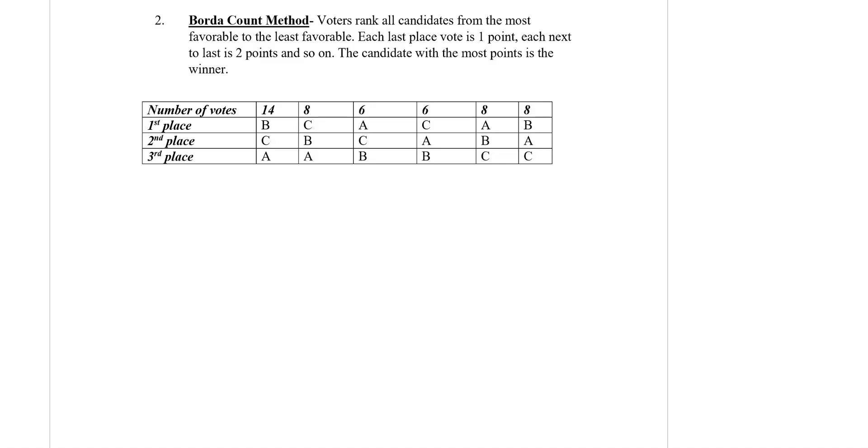In this video we'll talk about the second voting method called Borda Count method. Voters rank all candidates from the most favorable to the least favorable. Each last place vote gets one point, each next to last is two points, and so on. The candidate with the most points is the winner.